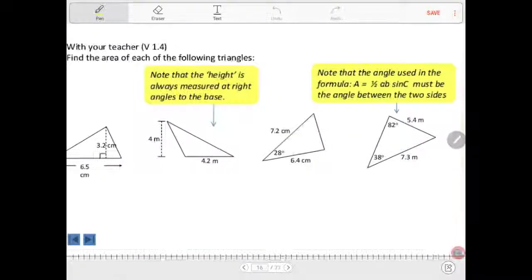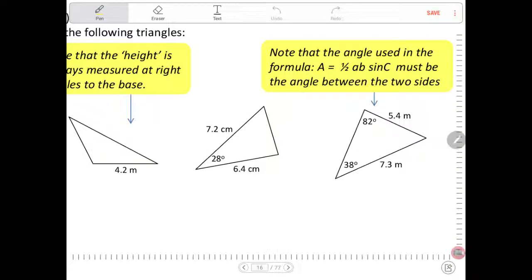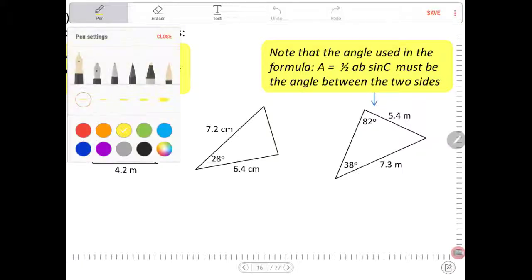So these two examples, we can see, have an angle in the triangle with two side lengths. So that's going to be a prompt for you to understand that, okay, I need to use the second method for these triangles. It's relatively simple, so let's have a go at it.